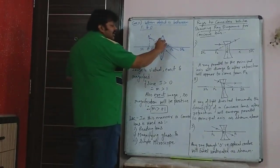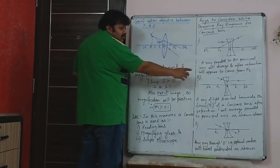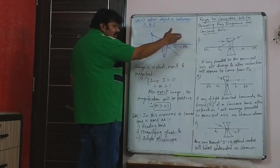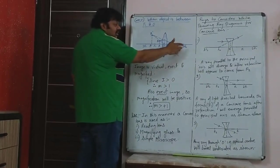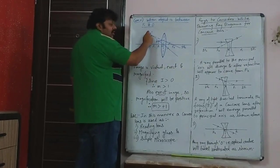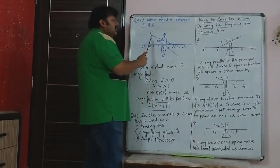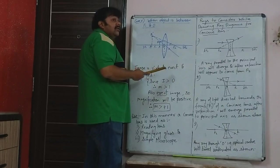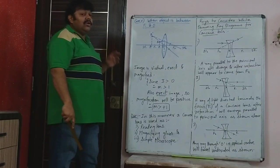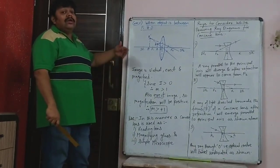Why virtual? Because the rays — the parallel ray going this way and the ray through optical center going this way — are diverging rays; they are not actually meeting. Because they are not actually meeting, it is only these rays produced backward that appear to come from B'. So the image is virtual erect. Virtual because the rays are not actually meeting; they appear to meet at B' when produced backward. The image is virtual, erect, and magnified.